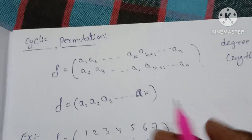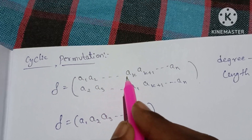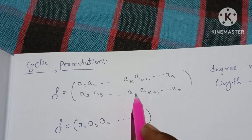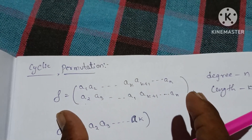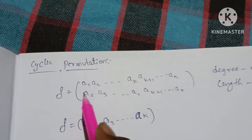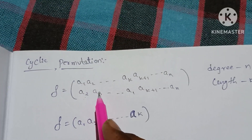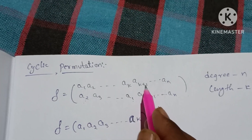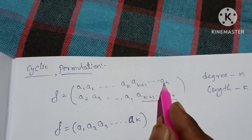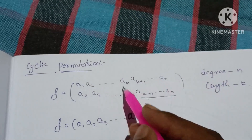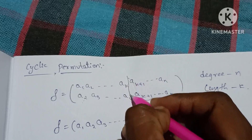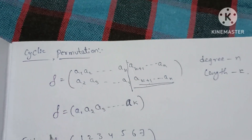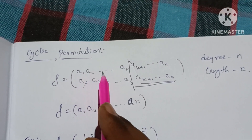Cyclic permutation: Permutation F is equal to (a1, a2, ... aK, aK+1, ...) where a1 maps to a2, a2 maps to a3, and so on — ak maps back to a1, while ak+1 and remaining elements map to the same elements. We consider these cyclic permutations: F = (a1, a2, ... ak).